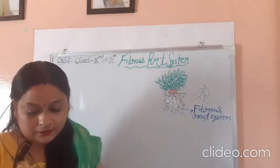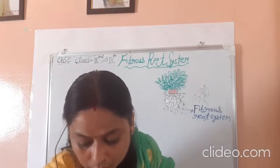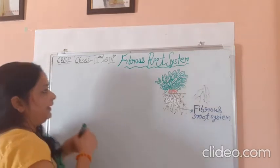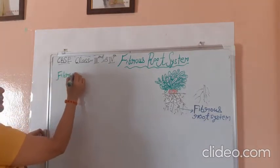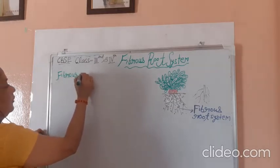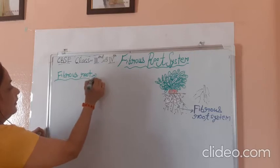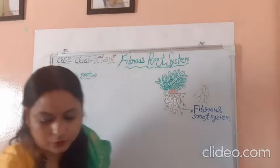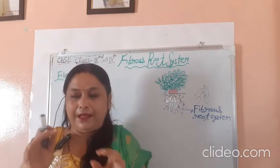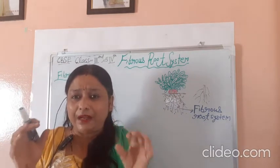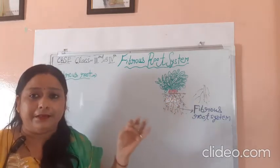Now let's write: some plants do not have a main root. Such plants may have many fiber-like structures of the same size arising from the base of the plant.